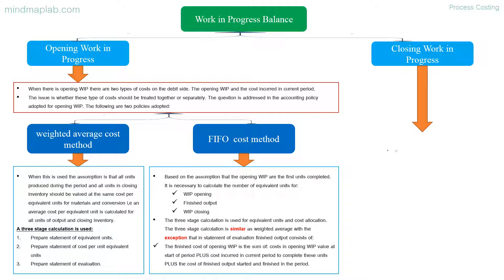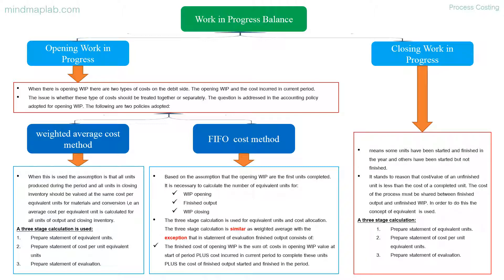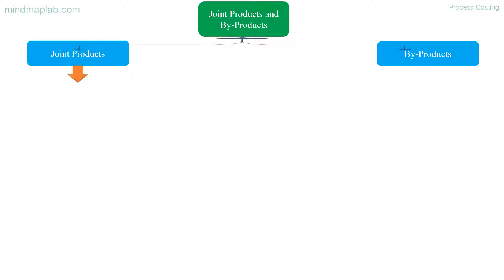Closing work in progress means some units have been started and finished in the year, and others have been started but not finished. The cost value of an unfinished unit is less than the cost of a completed unit. The cost of the process must be shared between finished output and unfinished WIP. To do this, the concept of equivalent units is used in a three-stage calculation: prepare a statement of equivalent units, prepare a statement of cost per equivalent unit, and prepare a statement of valuation.